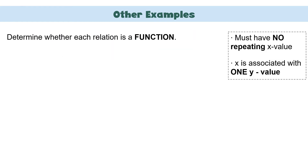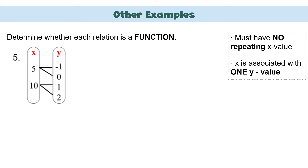Let us have more examples. We have a mapping here. 5 is connected to negative 1 and 0, and 10 is with 1 and 2. Remember: no repeating x-value, and x must be associated with only one y-value. But here, 5 is paired with negative 1 and 0, and 10 is with positive 1 and 2. Therefore, this is not a function.